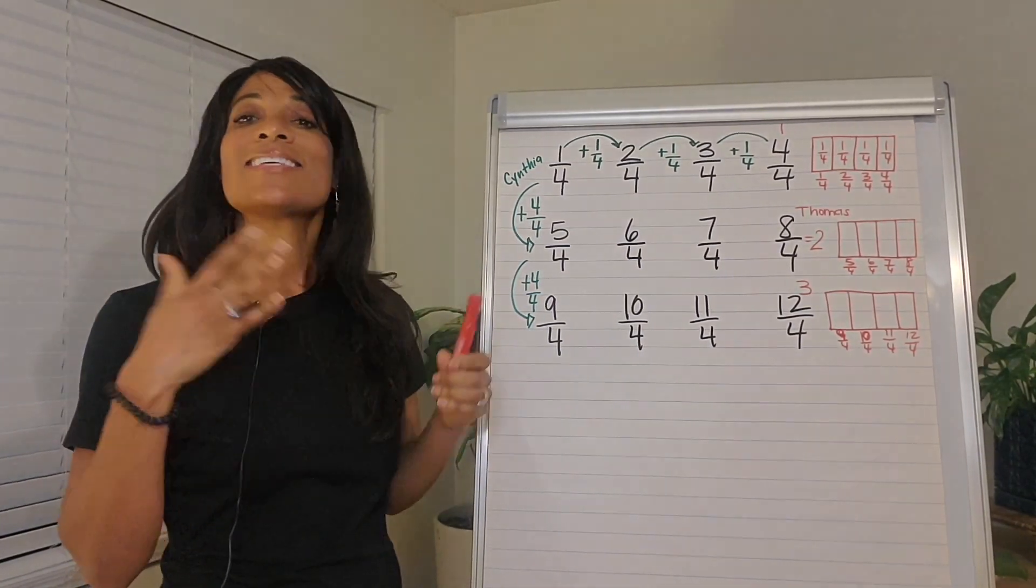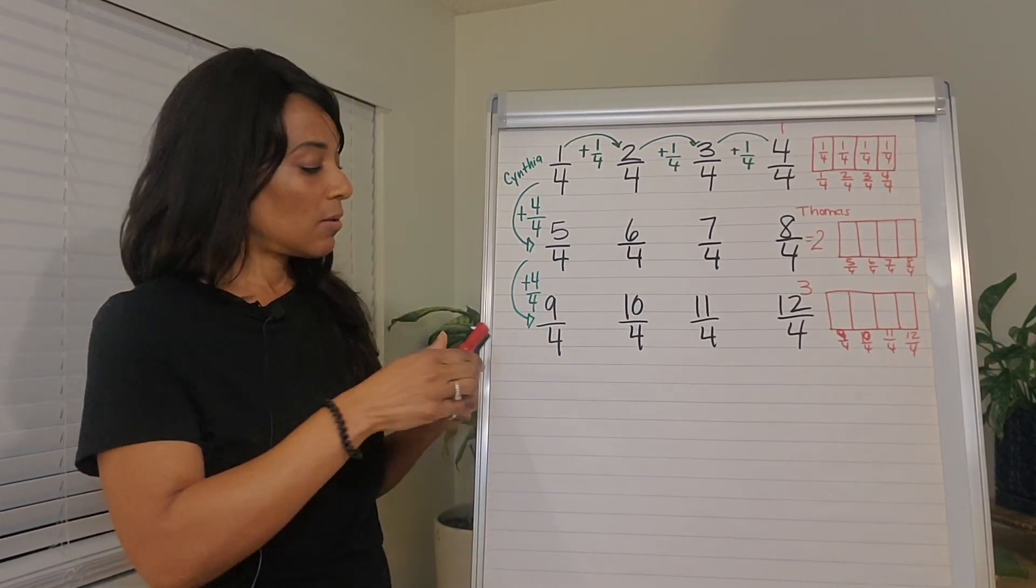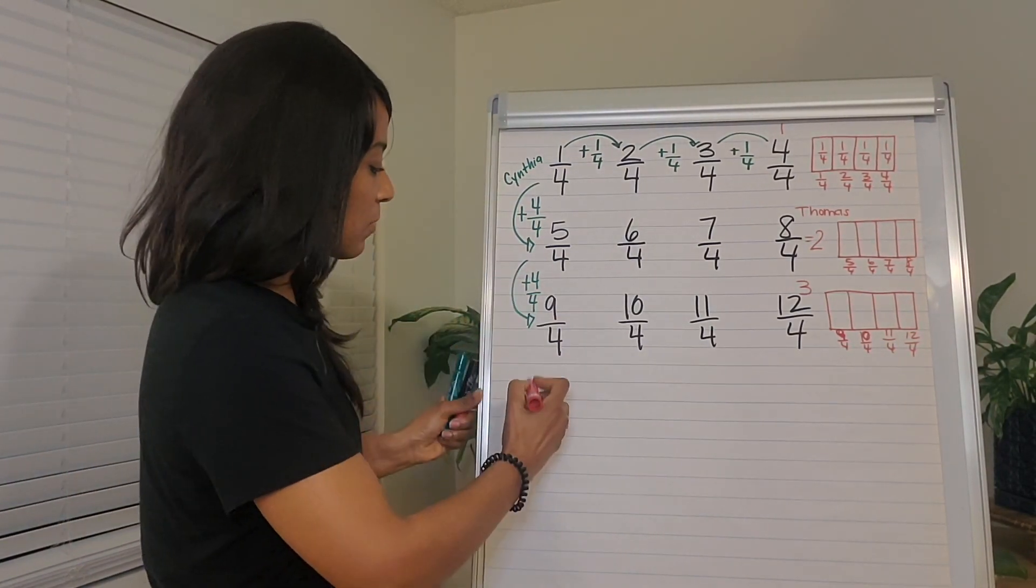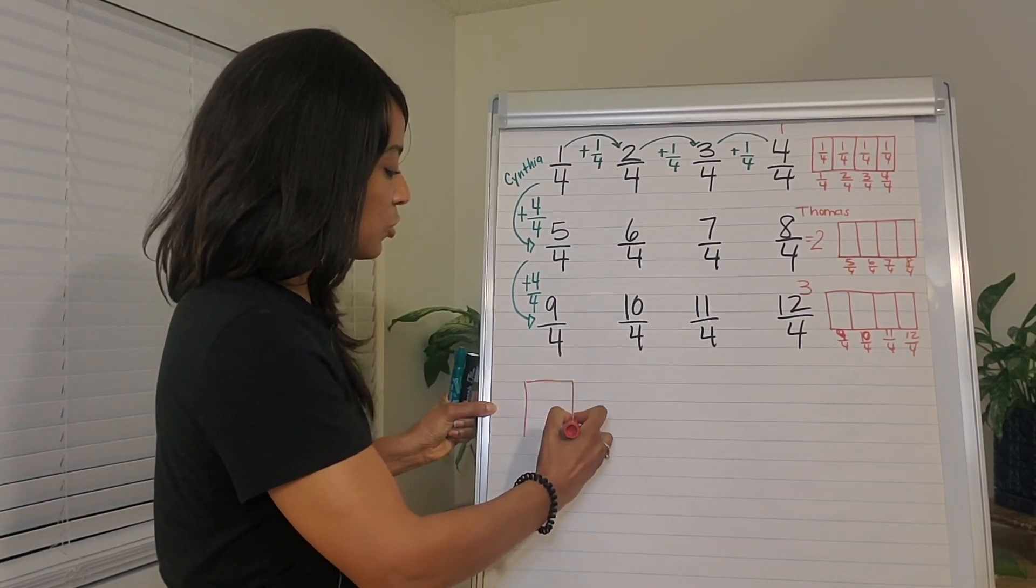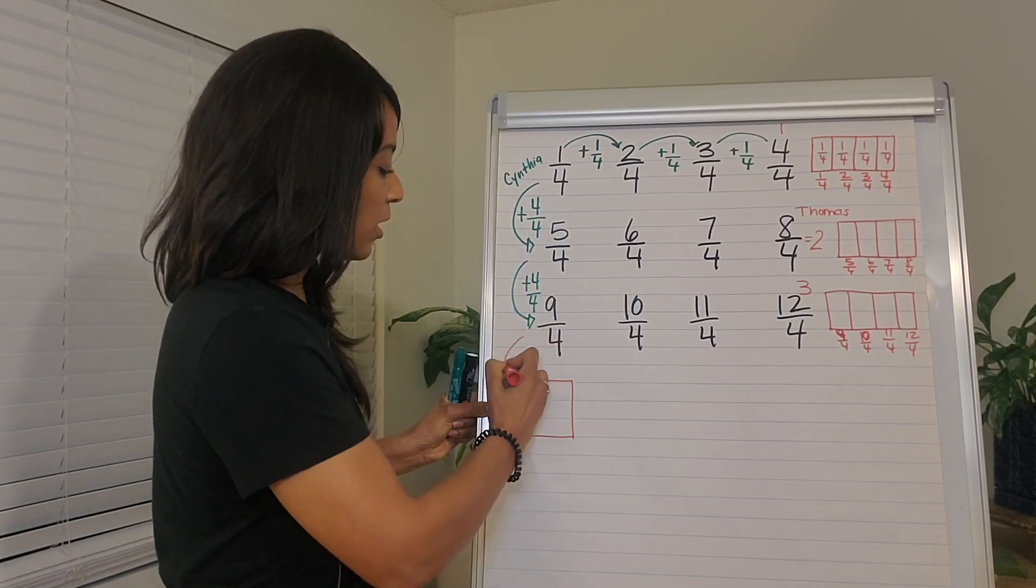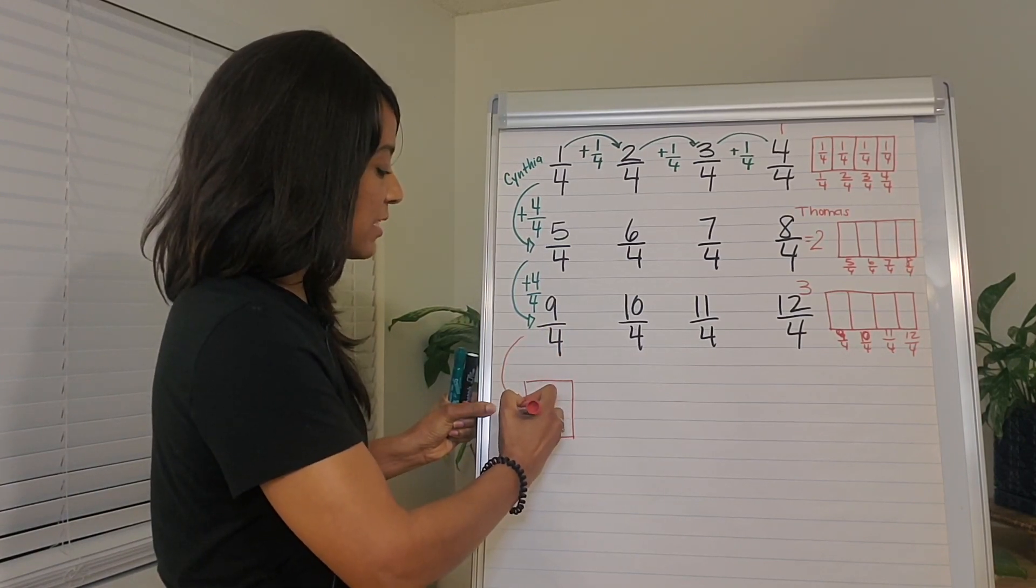So then I would ask the entire class, stop and think. What number or fraction do you predict will go here based on what Cynthia said?